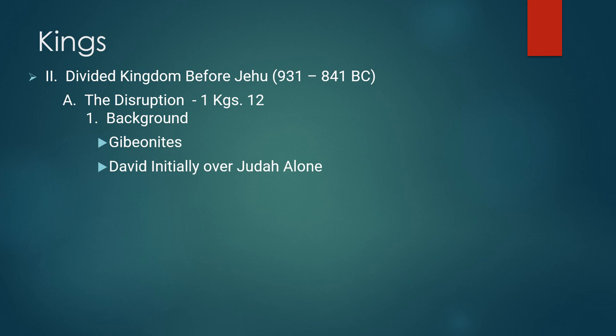There are also previous tendencies in some of the narratives prior to this time. Remember, at the beginning of David's reign, he ruled initially in Hebron just over the tribe of Judah — seven years over Judah, not all of Israel. At that time, Ish-bosheth, the son of Saul, was ruling over the northern tribes. We find that in 2 Samuel chapter 2.